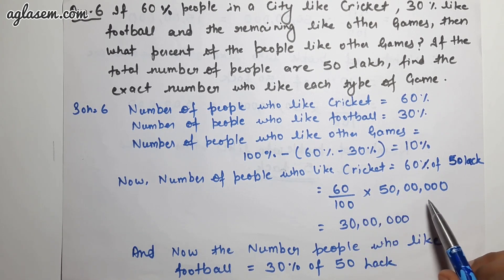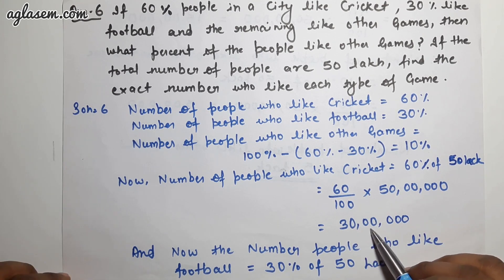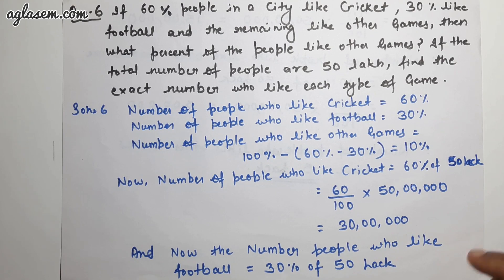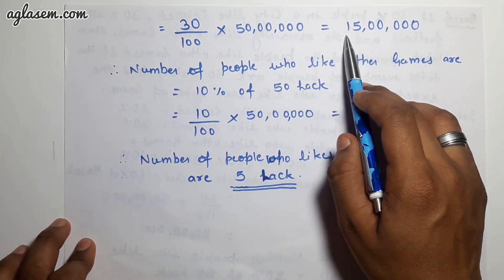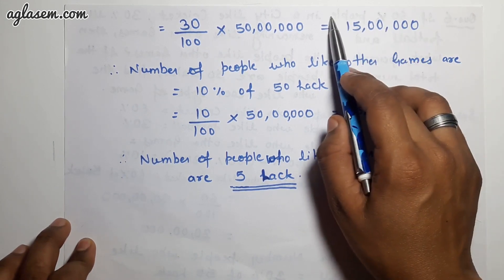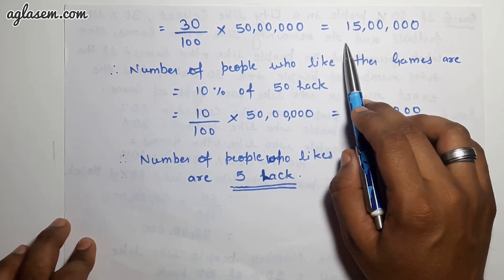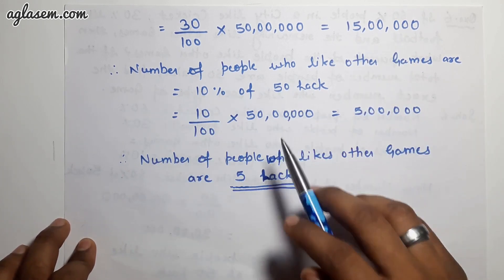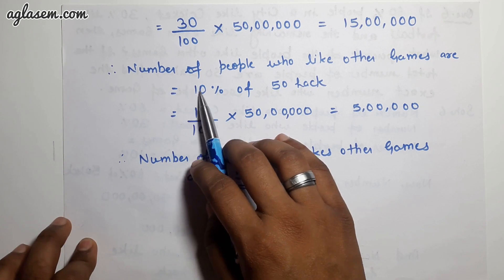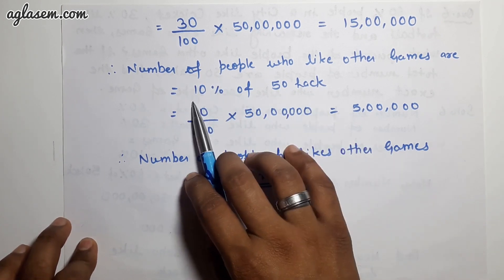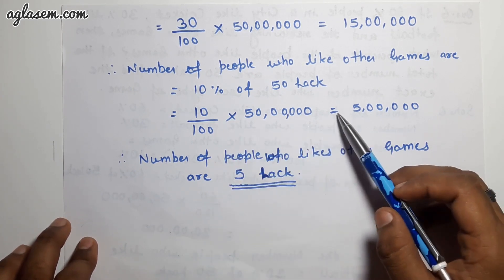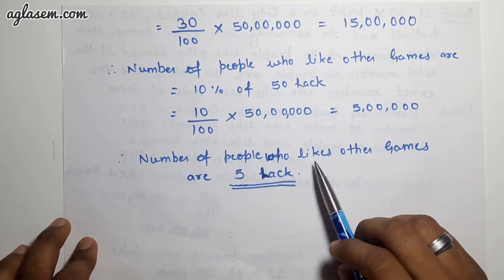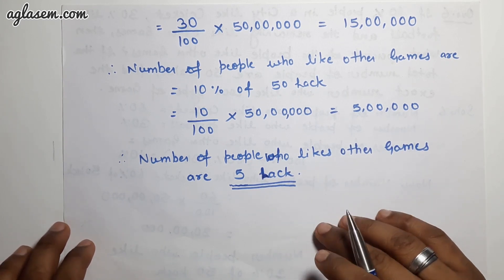People who like football = 30% of 50 lakh = (30/100) × 50 lakh = 15 lakh. People who like other games = 10% of 50 lakh = (10/100) × 50 lakh = 5 lakh.